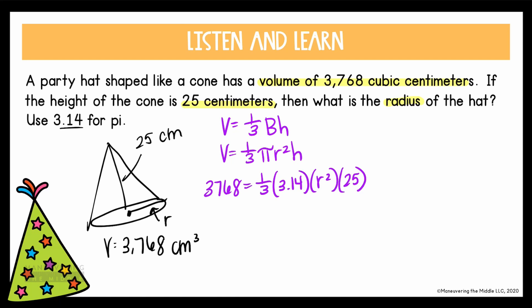So look at what you have, we have over here on the right three values that are being multiplied by r². We want to get r by itself, so the inverse of all this multiplication is division. I'm going to divide them one at a time to kind of show you step by step, starting with the 1/3. The opposite of multiplying by 1/3 is to divide by 1/3. When you do that on the left, that gives us 11,304. Then we're left with 3.14 times r² times 25.